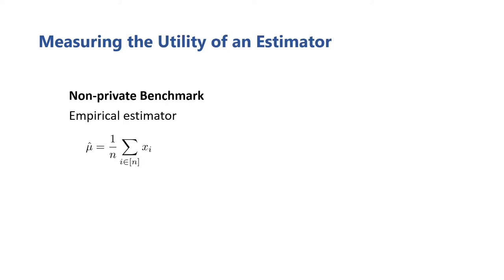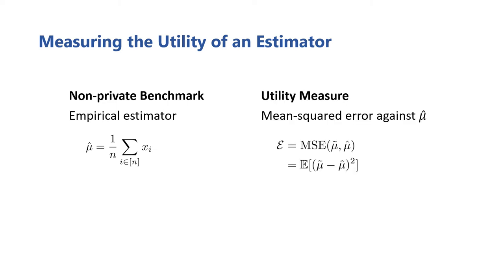To measure the utility of any private estimators we present, we benchmark them against the non-private empirical estimator, which computes the straightforward mean of all users' data. We can then define the utility of a differentially private estimator, mu tilde, against this benchmark as the mean squared error between mu tilde and the empirical estimator. We'll refer to this simply as the MSE of mu tilde, leaving the benchmark implicit.